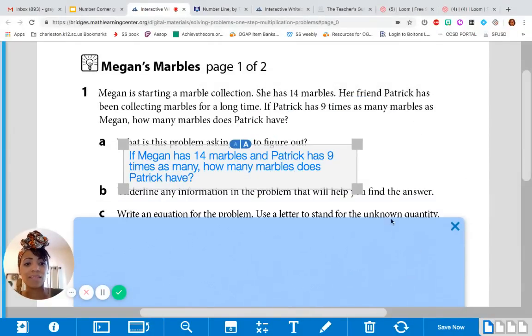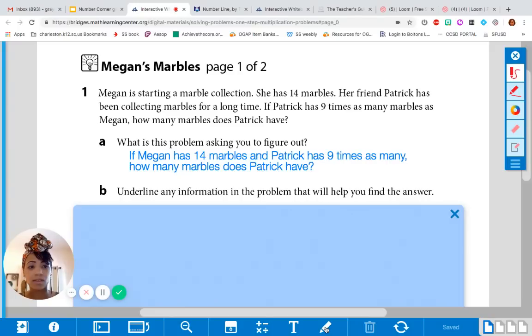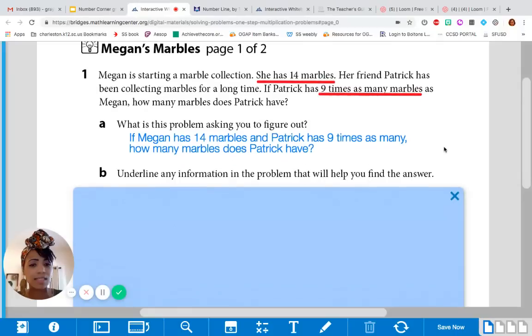Now, we need to figure out, well, what information is going to help us solve this problem? So, that's the critical information we talked about earlier. All right, we need to know that she had 14 marbles. What else is important? Good. That Patrick has nine times as many marbles. You got it.